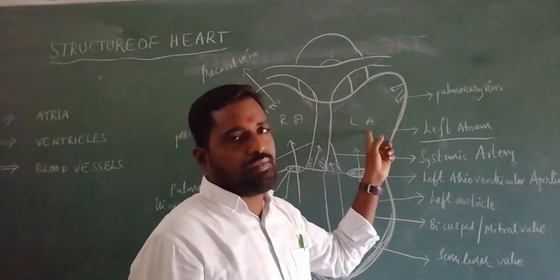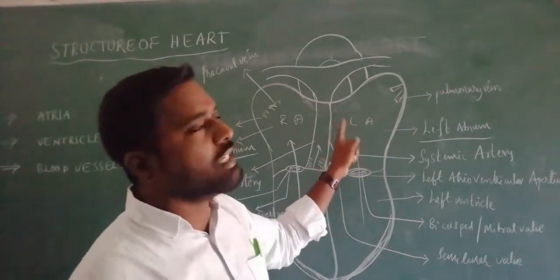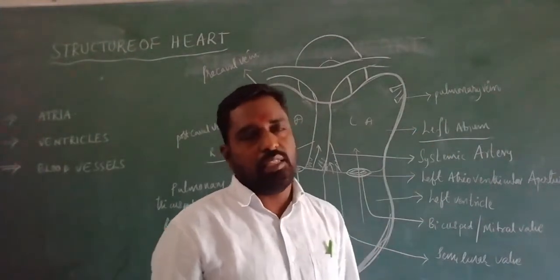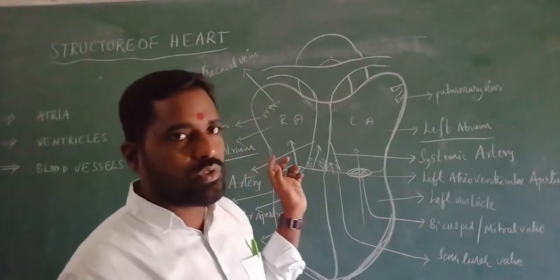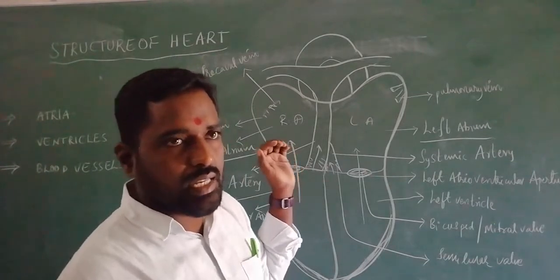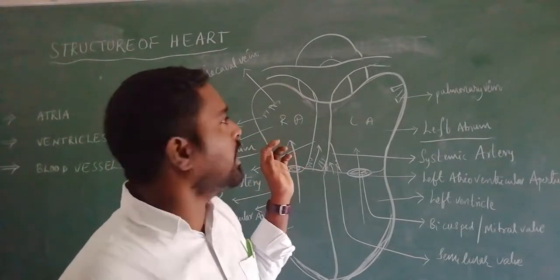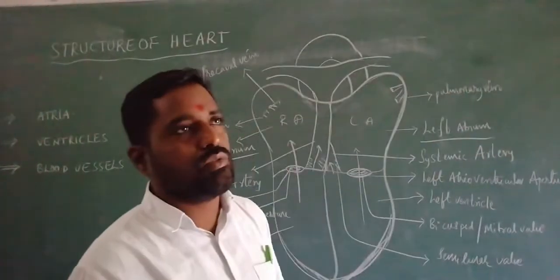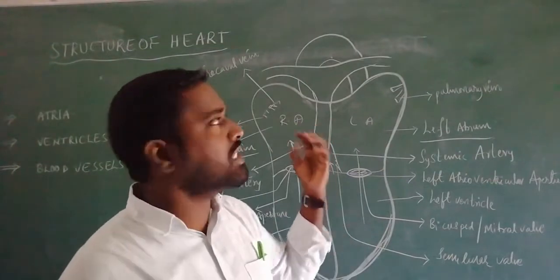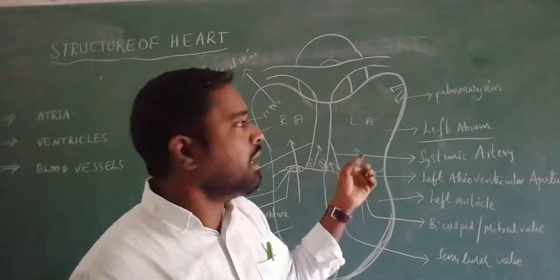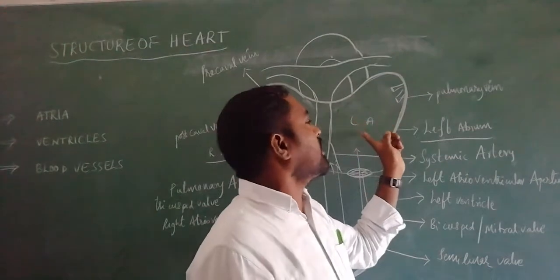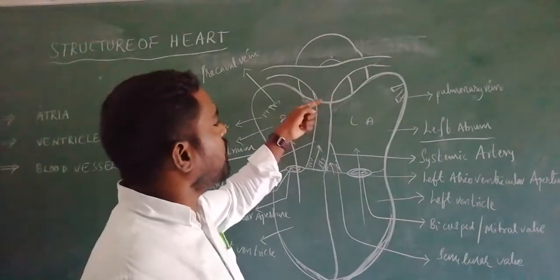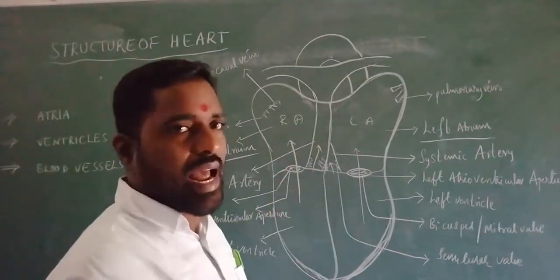The left atrium receives oxygenated blood from the lungs through a pair of pulmonary veins. Generally, veins carry deoxygenated blood to the heart, but the pulmonary vein is different — a pair of pulmonary veins receives oxygenated blood from the lungs and releases it into the left atrium. The right atrium and left atrium are separated by the inter-atrial septum.